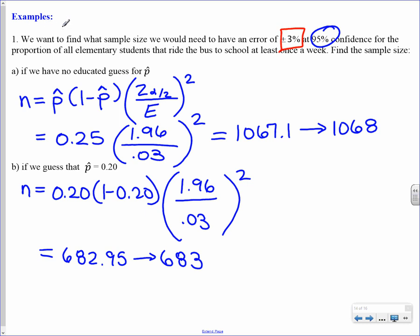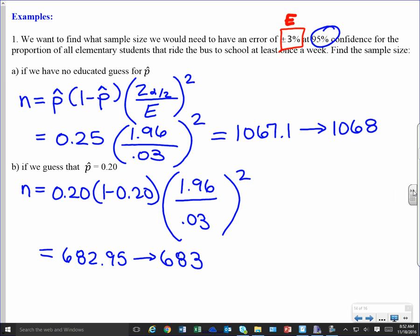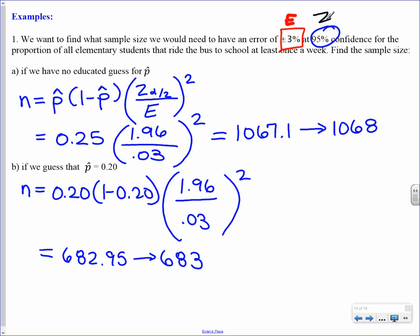So this example says we want to find what sample size we would need to have an error of plus or minus 3%. So that's going to be our e. That's our error. At 95% confidence. So 95% confidence tells us what our z-alpha half is going to be. That's our z-alpha half there. For the proportion of all elementary students that ride the bus to school at least once a week. So that's the study we're wanting to do. So how do we know what sample size we need? Well, this is our formula.